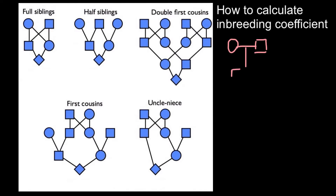This female and male have two children — a male and a female — and they both also have a child. This sign means that the gender is not specified, and this double bond means that this is consanguineous mating — mating between close relatives. As you see, these are two full siblings. So 50% of the genes the mother gives to this child and 50% the father gives.